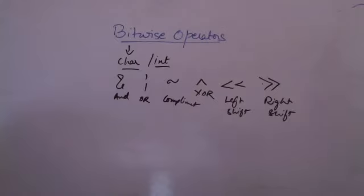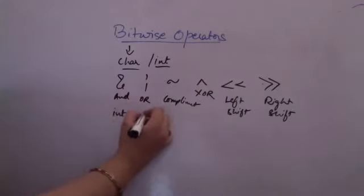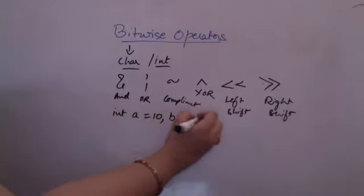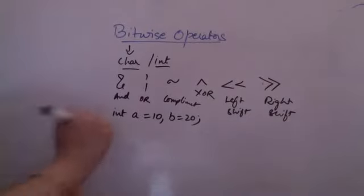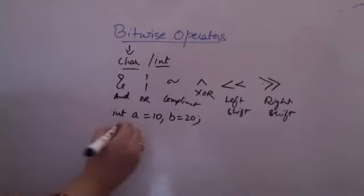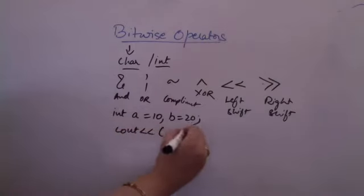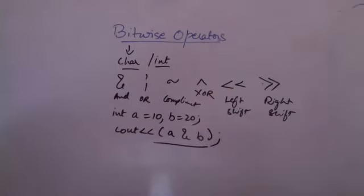Why are they called bitwise operators? Let us try to understand. Suppose I am having an integer A equal to 10 and B equal to 20. I am having two integers here. Now I am trying to do a bitwise operation — printing the result of A and B. So what will happen in this case? It is going to give me an output which is the bitwise operation.